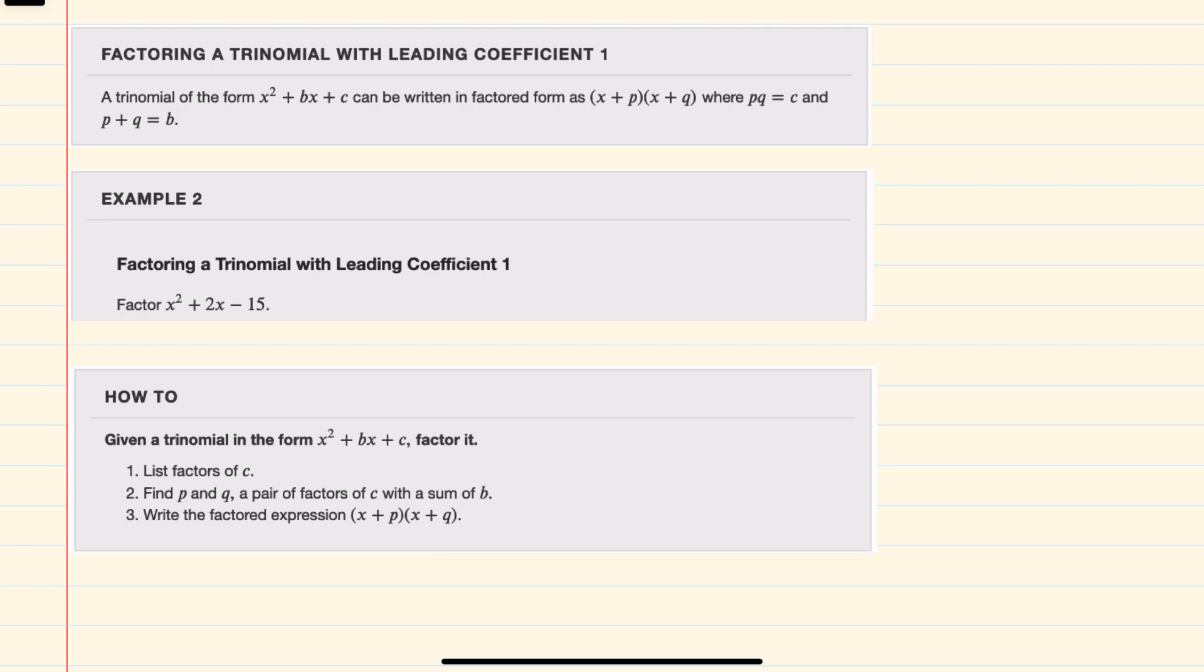We're given the definition for factoring a trinomial with leading coefficient 1 to be in this form: (x + p)(x + q), where p times q equals the constant c, and p plus q equals the middle coefficient b.